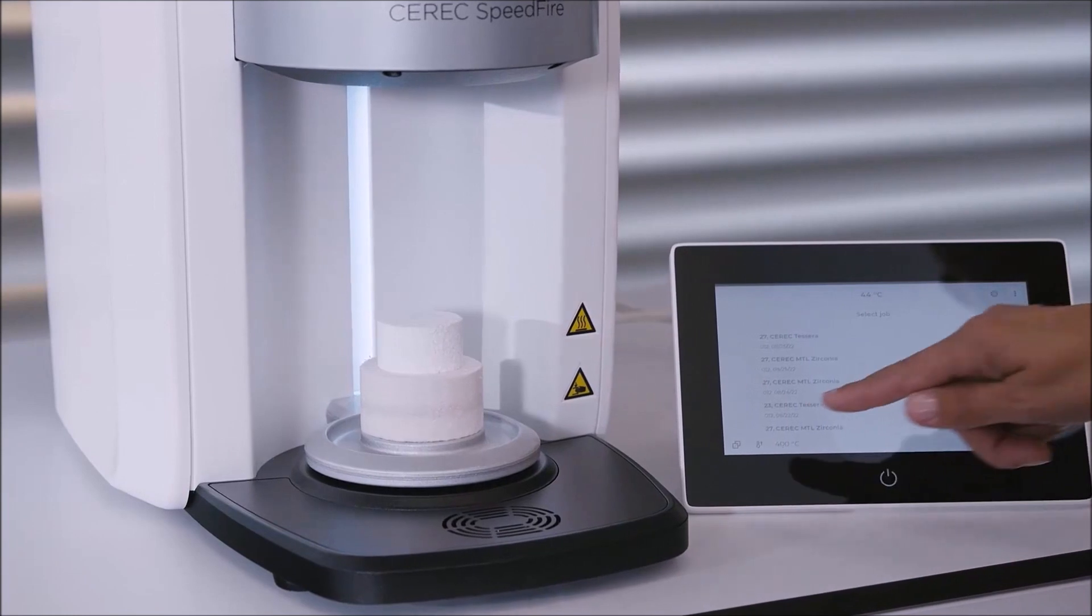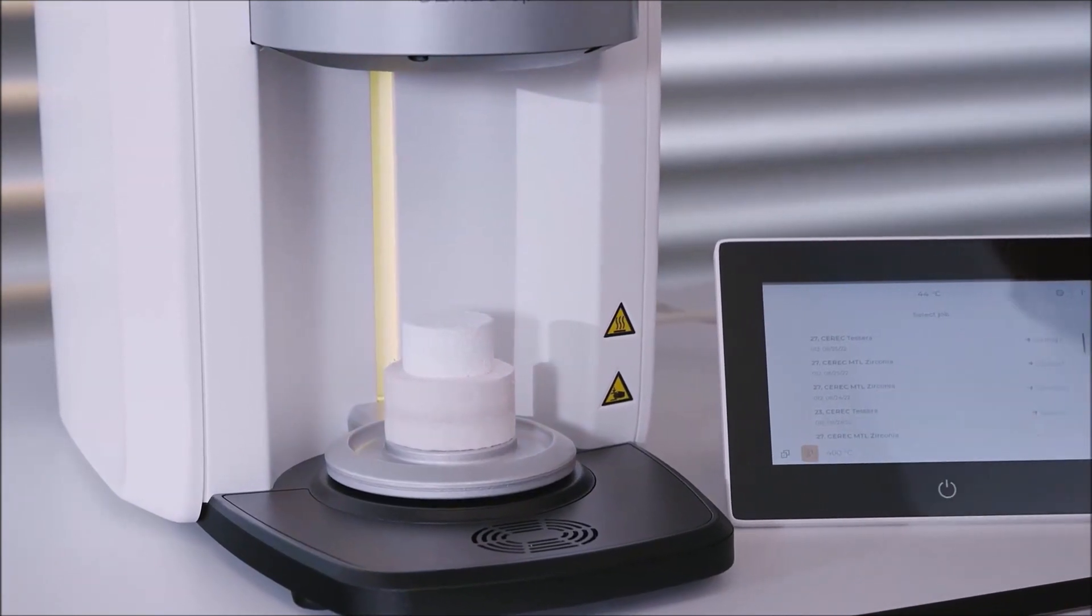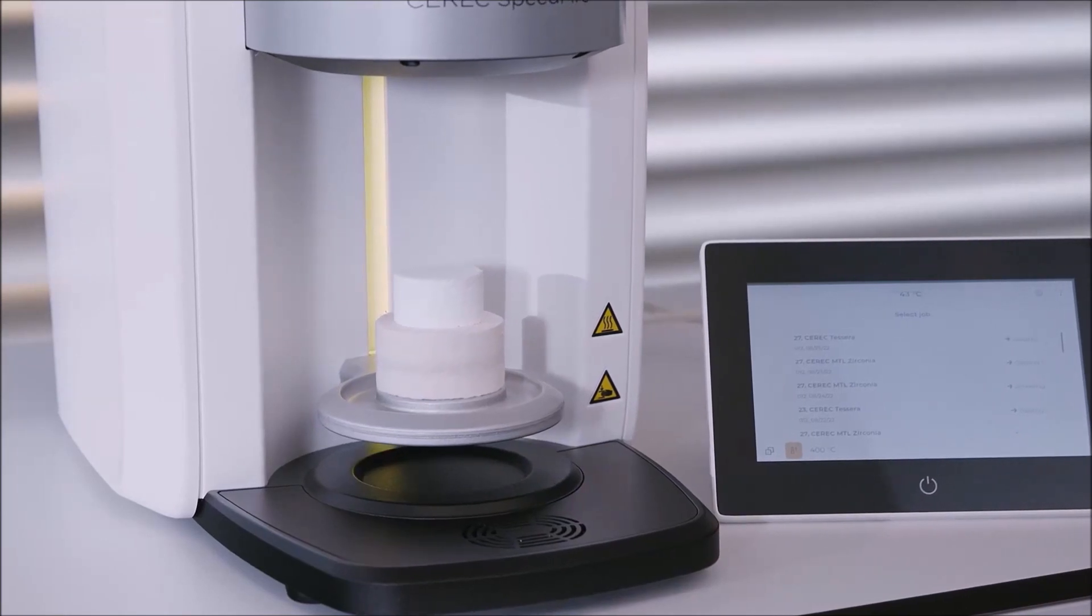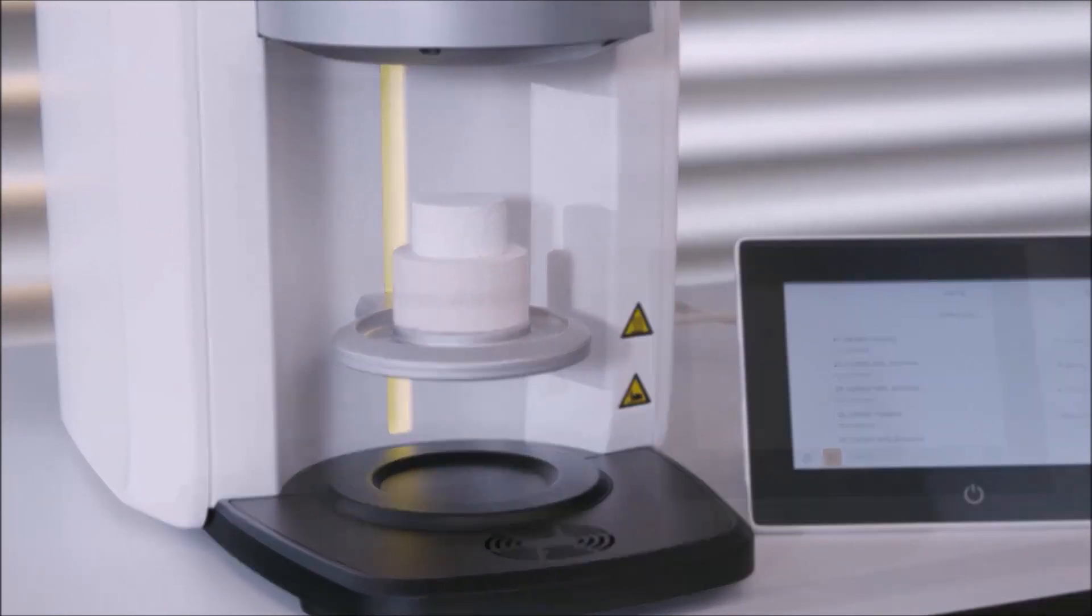We tap the corresponding icon, which turns orange, and the chamber slowly closes. Once the firing chamber is closed, the preheating process begins.